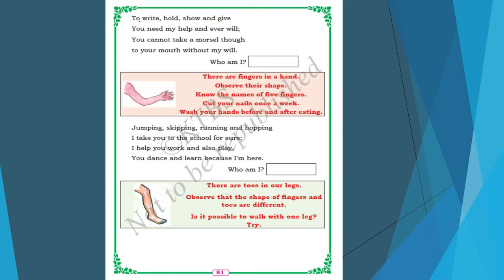Next riddle: To write, hold, show and give — you need my help and ever will. You cannot take a morsel to your mouth without my will. Which part is this? The answer is hand. There are fingers in a hand — observe their shape and know the names of the five fingers. Cut your nails once a week and wash your hands before and after eating.